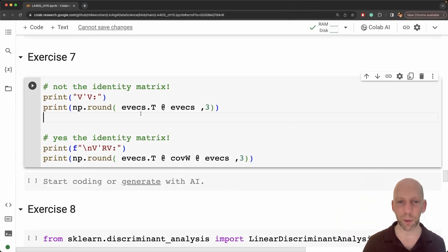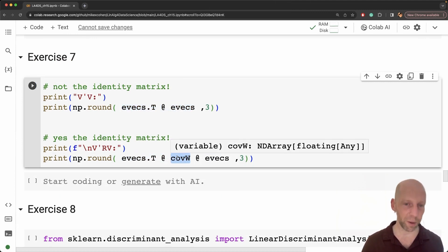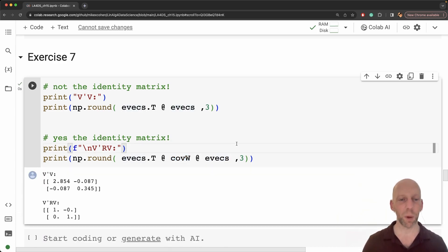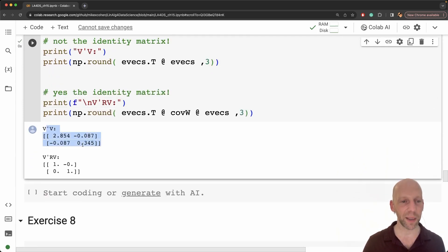Well, there's very little code that we need here. We just compute V transpose times V, and here V transpose times the covariance matrix of the within class data times V. And then what we expect is that this is not the identity matrix, and this is the identity matrix.